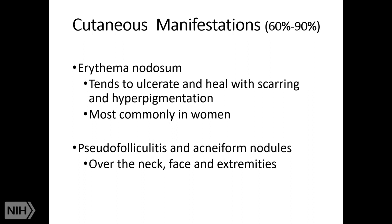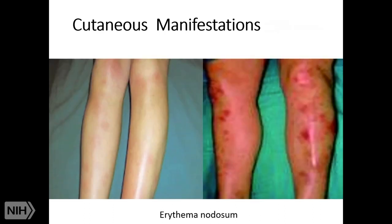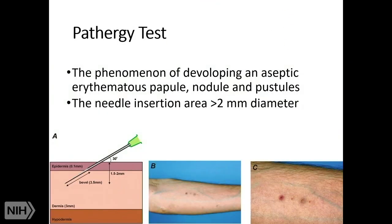Cutaneous manifestations occur in around 60 to 90 percent of patients, depending on the geographic area. Generally we see erythema nodosum, or pseudofolliculitis and acneiform nodules. Pathergy test is also used as supportive diagnostic criteria. At the needle insertion area, the phenomenon develops as an aseptic erythematous papule, nodule, or pustule, as you can see in this patient.